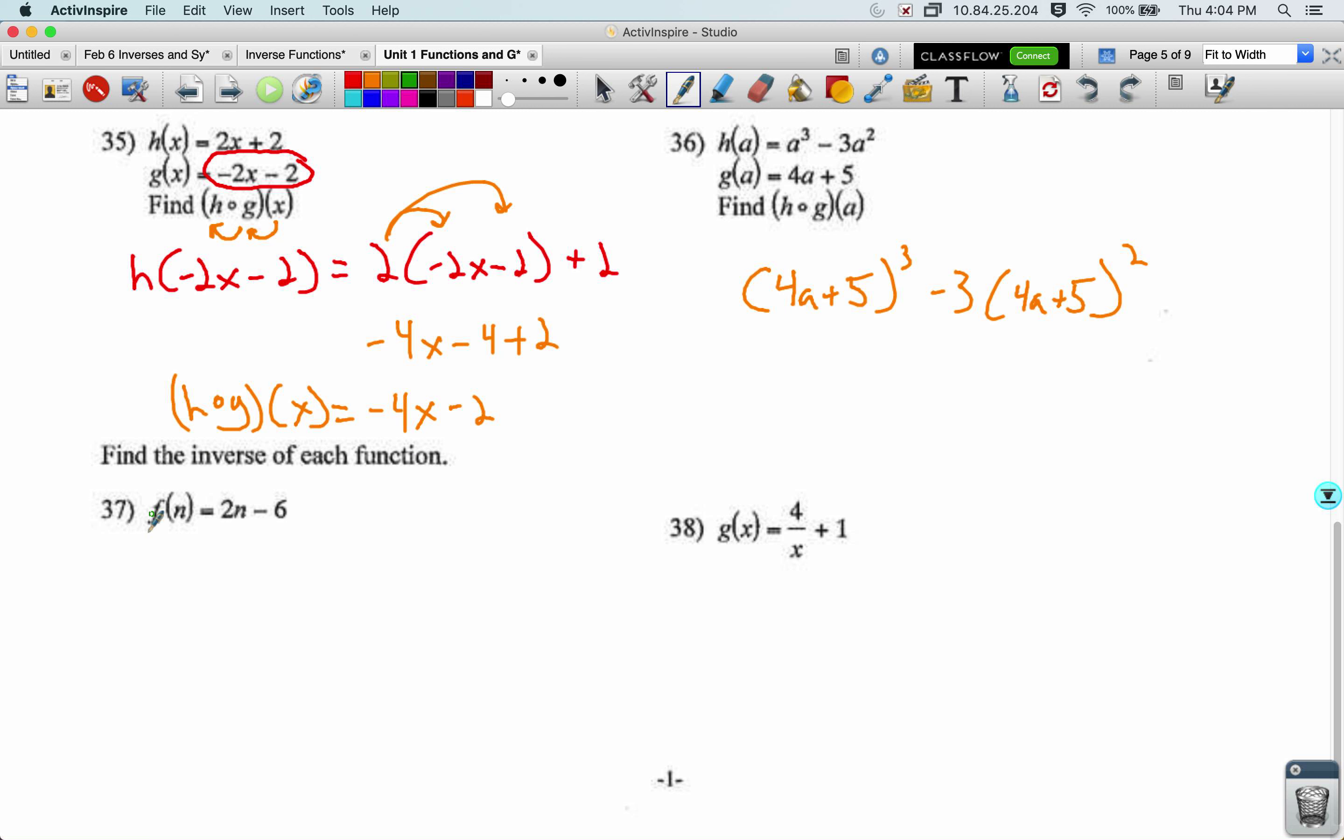All right. Finding inverses. First thing, write it with an x and a y. So y equals 2x minus 6. Next thing, swap x and y. x equals 2y minus 6. Next, solve for y. So I'm going to add 6 to both sides. x plus 6 equals 2y. Divide both sides by 2. I get that y equals x plus 6 over 2. But then lastly, rewrite it with function notation. f to the negative 1 of n equals n plus 6 over 2. So rewrite with x and y, swap x and y, solve for y, rewrite with function notation.